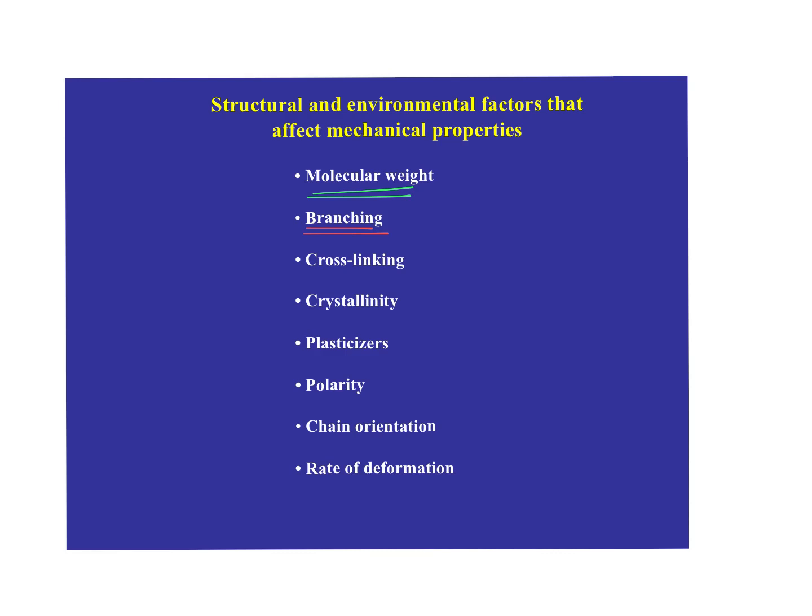Branching on a polymer makes it much harder to move — chains have to slide past each other, but then a branch bumps into the adjacent chain and sliding stops. Cross-linking we should be really familiar with. Crystallinity locks polymer chains up inside a crystal structure — the amorphous material can move, which is why semi-crystalline plastics are so useful, but those chains are still connected to the crystals, so ultimately the crystals restrain polymer chain movement. Plasticizers and other additives increase free volume, resulting in more chain motion and changes in mechanical properties.